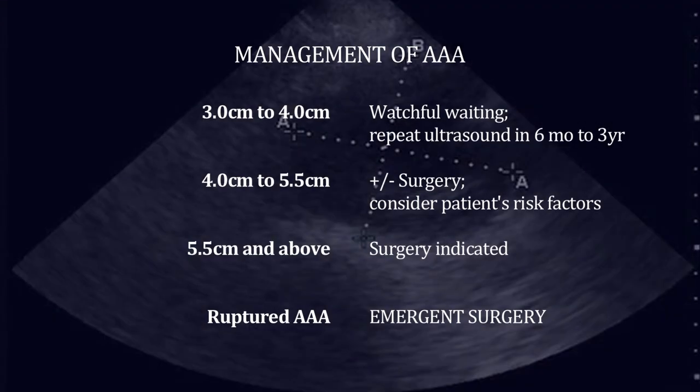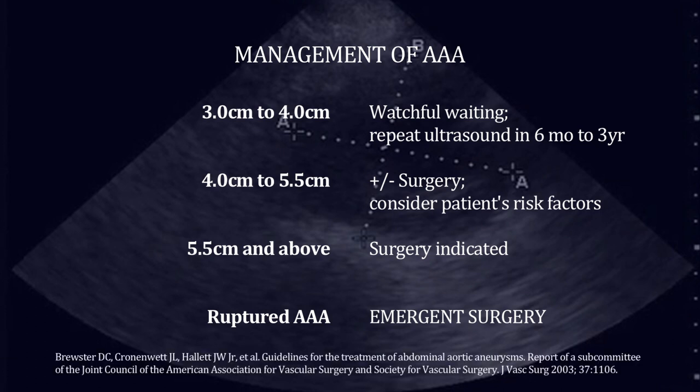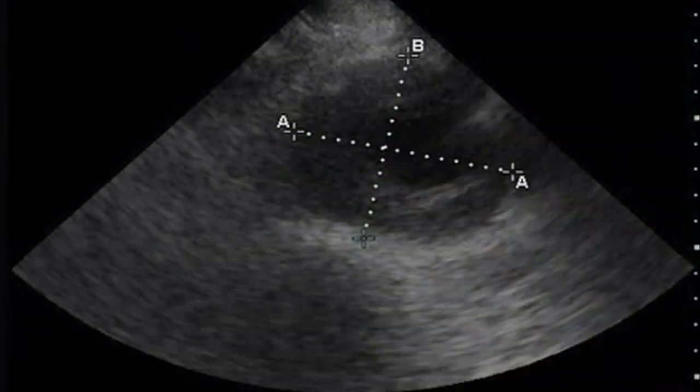Let's talk about treatment options. AAAs are bad because they can rupture and kill you, and the risk for rupture increases with size. If the aneurysm is between three and four centimeters, surgery is usually not indicated. If it's greater than 5.5 centimeters, surgery is indicated. If it's between four and 5.5 centimeters, surgery may be indicated depending on the patient's risk factors. This patient actually had a AAA of seven centimeters, so he definitely went to the OR.